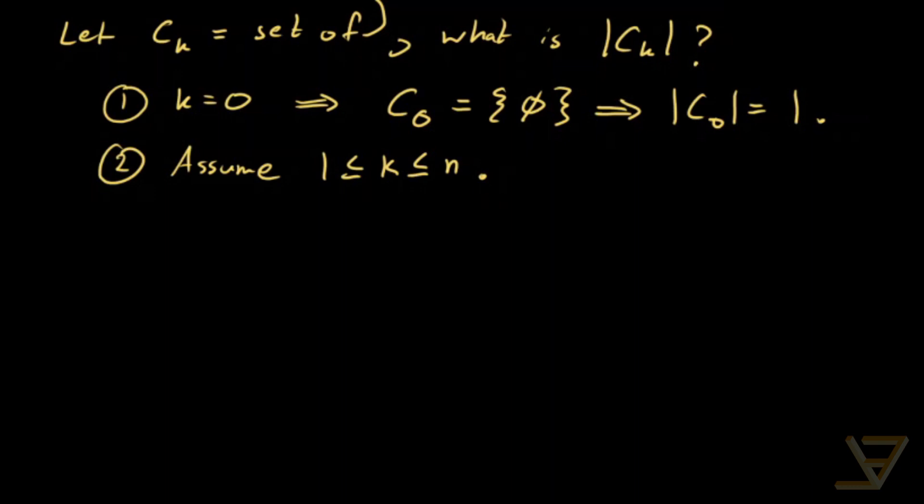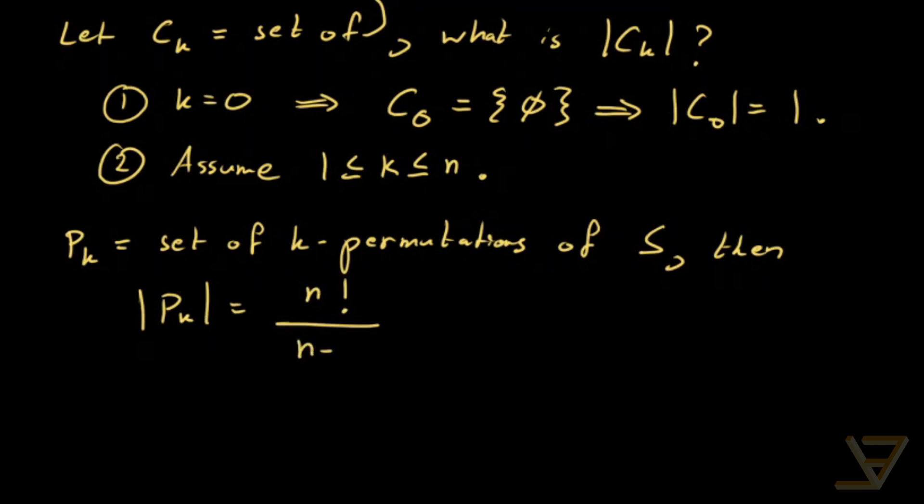Notice that if P_k is equal to the set of k-permutations of S, then the cardinality of P_k is equal to n factorial over n minus k factorial. We've derived this in a different video. And this is somehow easier to do than find the cardinality of C_k.